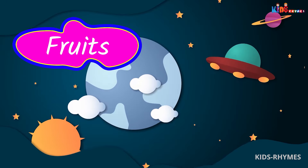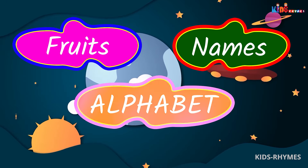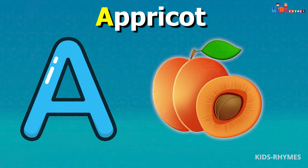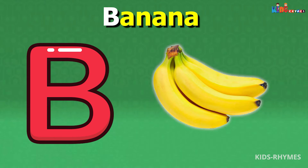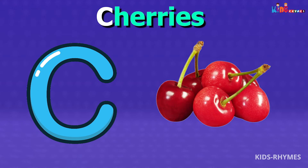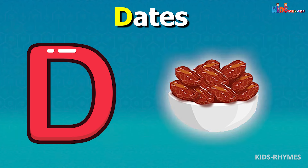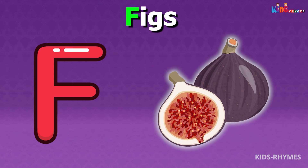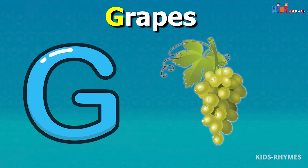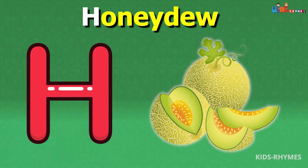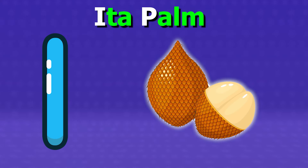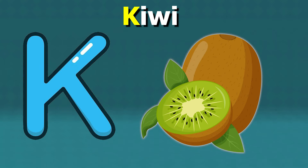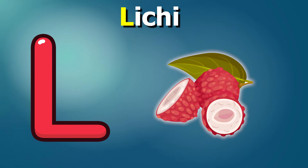Fruits name according to alphabets: A for apricots, B for bananas, C for cherries, D for dates, E for elderberries, F for figs, G for grapes, H for honeydew, I for damplum, J for jackfruit, K for kiwis, L for lychees.